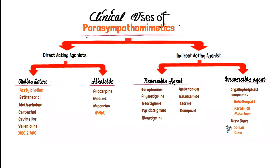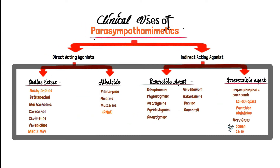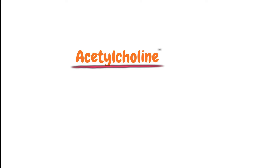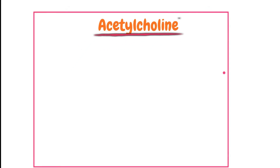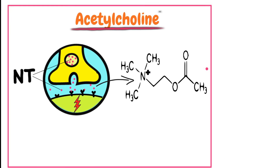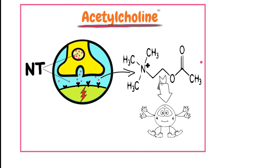We are going to discuss their clinical uses one by one, starting with the direct-acting cholinergic agonists. The first one is acetylcholine. Acetylcholine acts as a neurotransmitter and, being a nitrogenous compound, bears a positive charge and cannot cross the biological membrane if given orally. Acetylcholine lacks therapeutic application because it has diverse sites of action, acting on both muscarinic as well as nicotinic receptors.